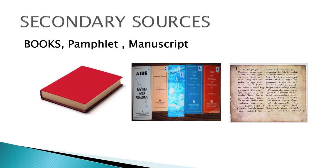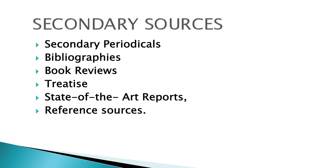Now we shall discuss secondary sources of information. Information published in primary sources on a particular subject is widely scattered and available in a large number of primary sources. In addition, research results are published in different languages. This scattered information is compiled and published in the form of secondary sources, which include secondary periodicals, bibliographies, books, reviews, treatises, state-of-the-art reports, reference sources, etc.